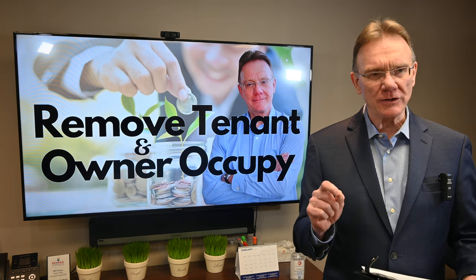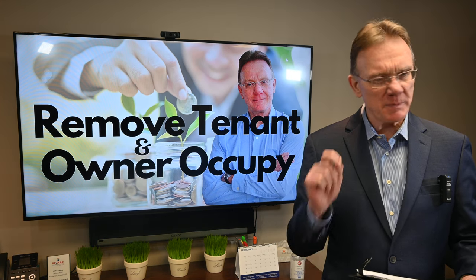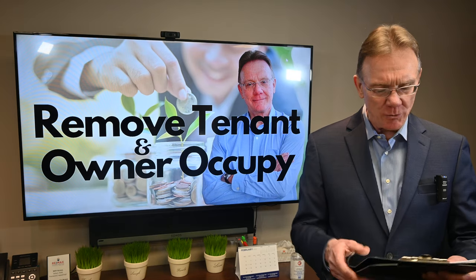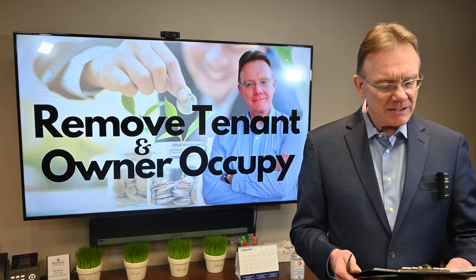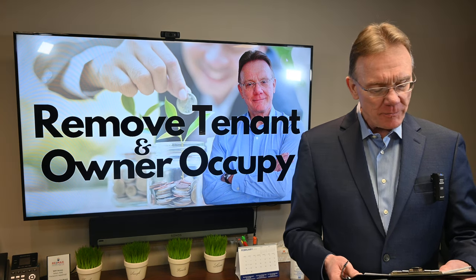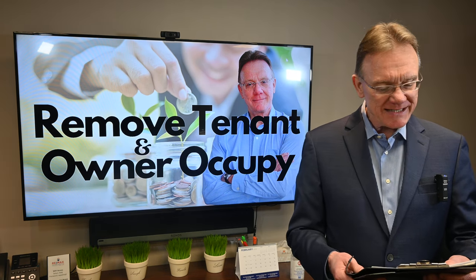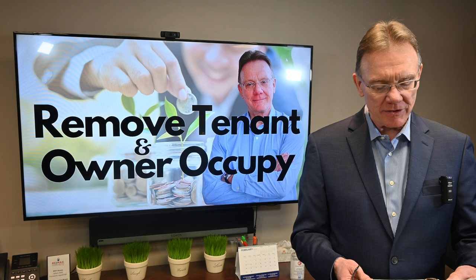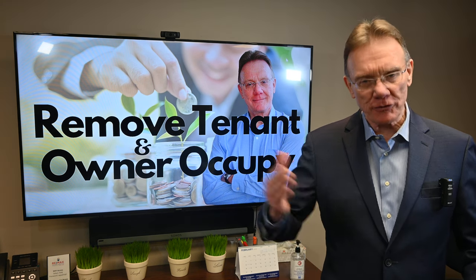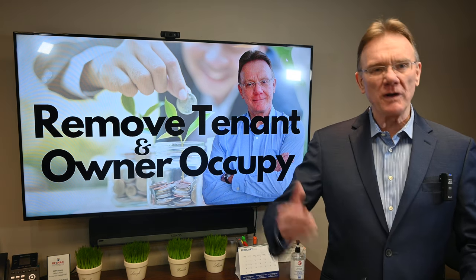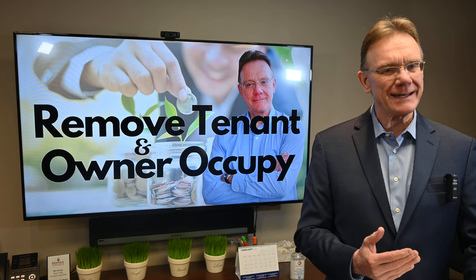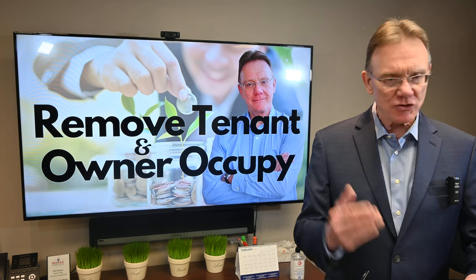You can't evict a tenant if the building is greater than four units — most people don't realize that. The tenant's lease must have ended and they must be on month-to-month. You must give a minimum of 60 days notice from the end of the month. For example, if a tenant is on their third month of a 12-month lease, you cannot evict them — the lease takes precedent over anything else.